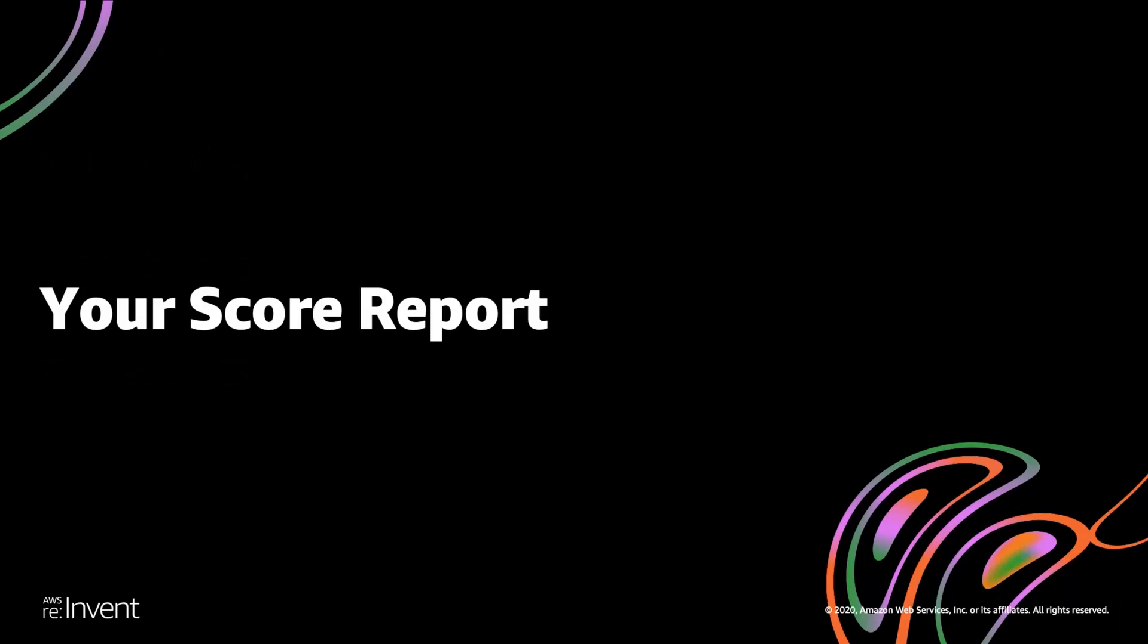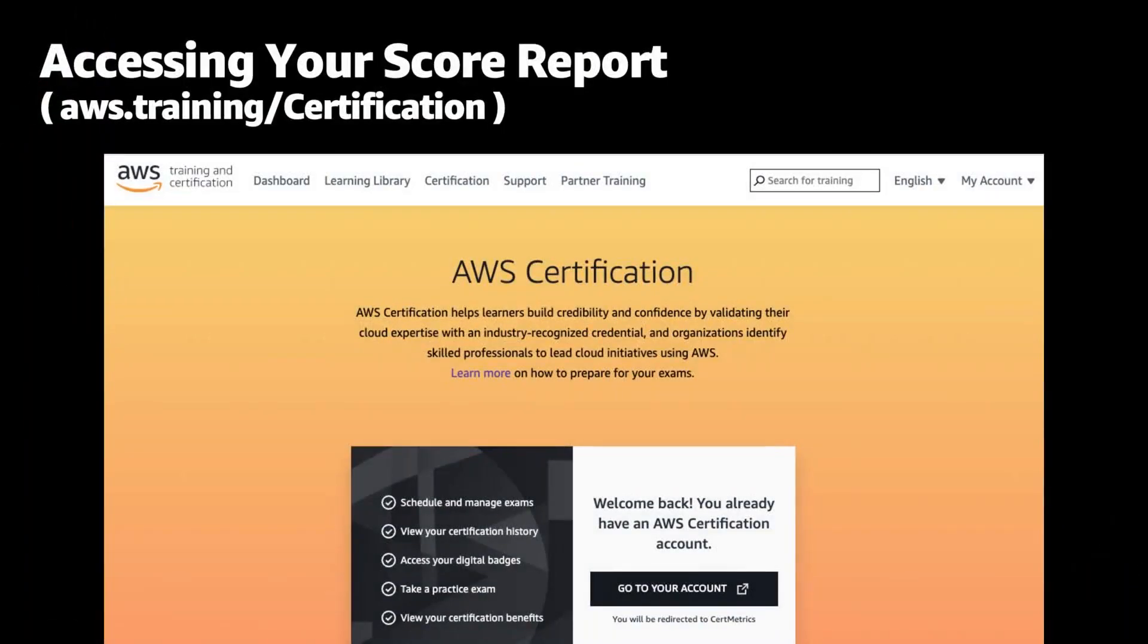Let's start with the score report. To access your score report, you need to log into your CertMetrics account. And to do that, you can start at aws.training/certification. That will redirect you to CertMetrics.